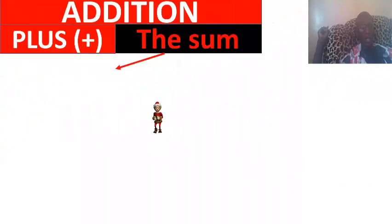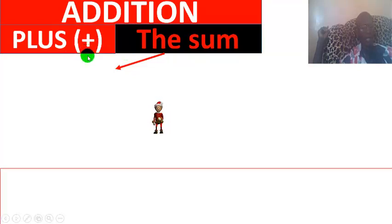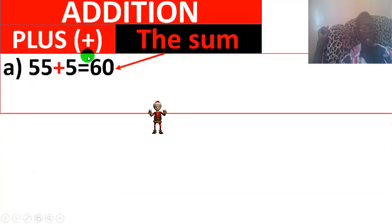First, we start with addition. Addition is symbolized by the plus sign, and the result we find in addition is called the sum. 55 plus 5 equals 60. In English, how do you read it? 55 plus 5 equals 60.